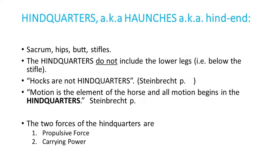Hindquarters, also known as haunches or hind end. The hindquarters include the sacrum, the hips, the buttocks, and the stifles. The hindquarters do not include the lower legs — i.e., below the stifle. Hocks are not hindquarters, said Herr Steinbrecht. Motion is the element of the horse, and all motion begins in the hindquarters. There are two forces of the hindquarters: propulsive force and carrying power.